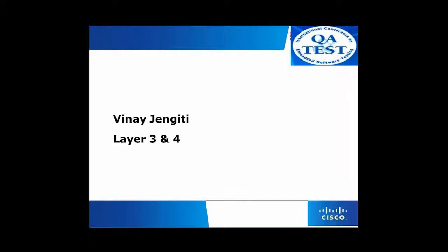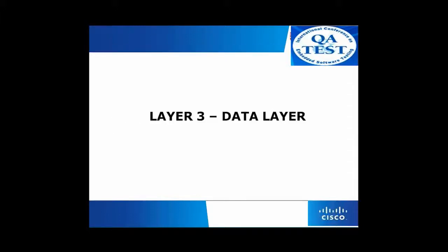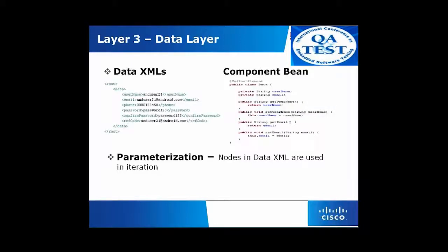I am going to go through layers 3 and 4. Layer 3 is the data layer. We use XMLs for passing data as test data. Data XMLs are sent as input to the test layer. The details provided in the data XMLs are parameter values of the attributes. For the user component, the different attributes of users are converted to the component bean. In the example, we can see username, email, phone, password, and confirm password all having corresponding details in the component bean.